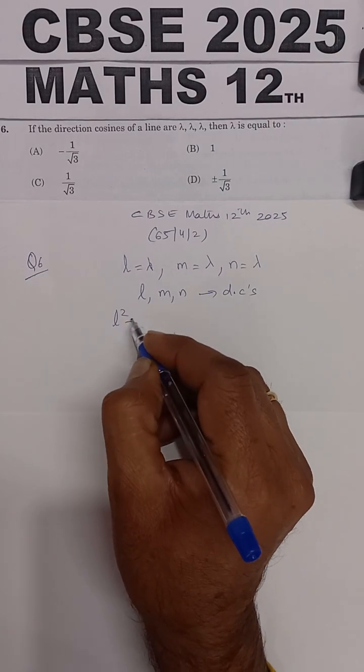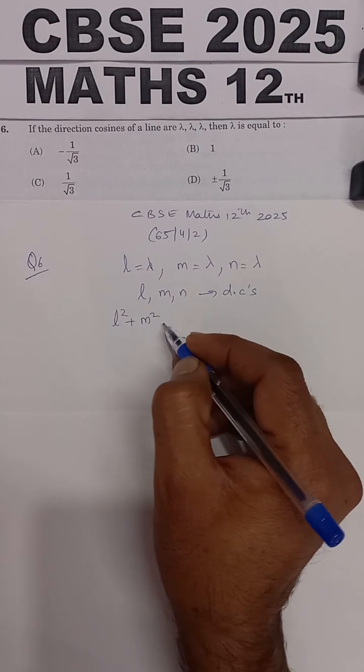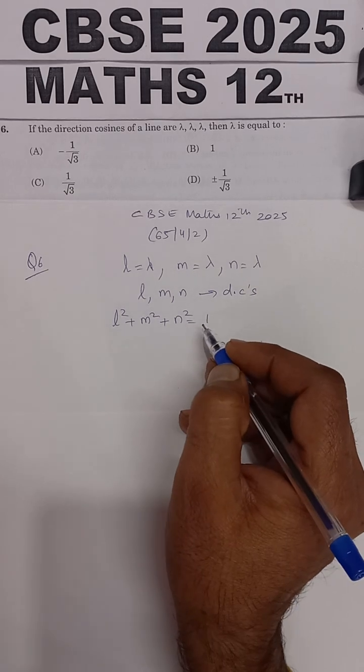So the relationship, the key concept we use, is that L square plus M square plus N square is equal to 1.